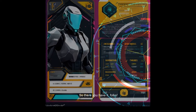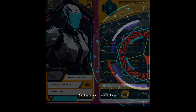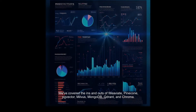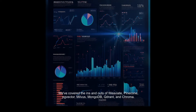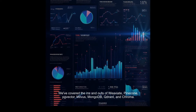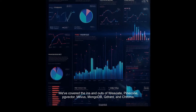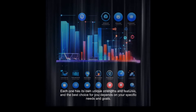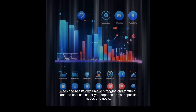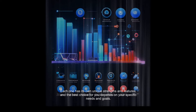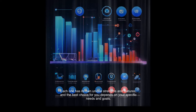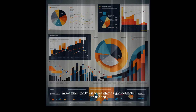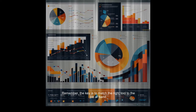So there you have it, folks. We've covered the ins and outs of Weaviate, Pinecone, Pgvector, Milvus, MongoDB, Qdrant, and Chroma. Each one has its own unique strengths and features, and the best choice for you depends on your specific needs and goals. Remember, the key is to match the right tool to the job at hand.